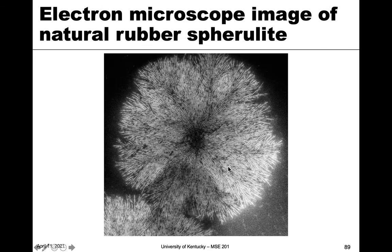Here's a more detailed electron micrograph of a spherulite forming in natural rubber. You can see that it doesn't depend so much on the specific material as on it being a semi-crystalline polymer — natural rubber, polyethylene, and so forth can all do this. You can see the general shape where it nucleates in the middle and grows out in branches, ending up looking like dandelions.